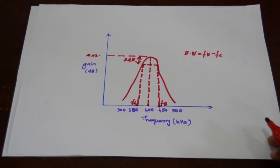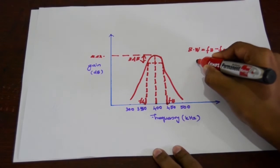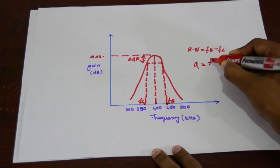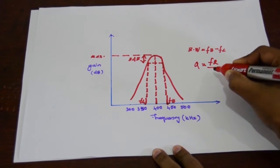Now we calculate the selectivity or the Q factor. The expression of the Q factor is resonant frequency divided by bandwidth.